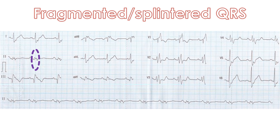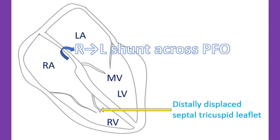A portion of the right ventricle is atrialized because of distal displacement of the septal and posterior leaflets of the tricuspid valve. Patients are also prone to atrial arrhythmias due to a dilated right atrium.